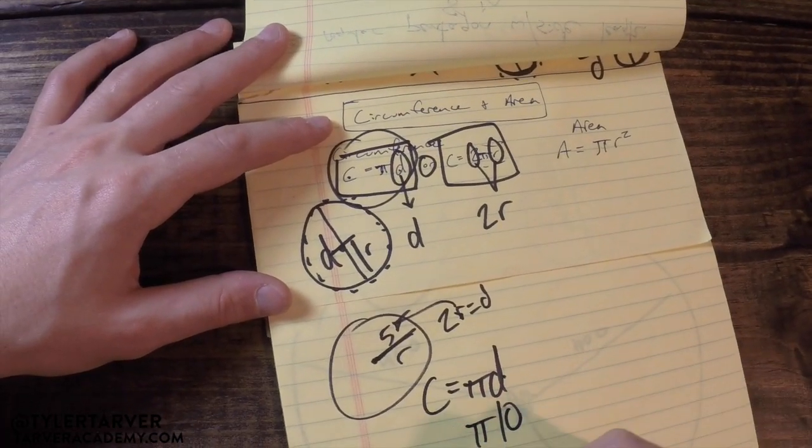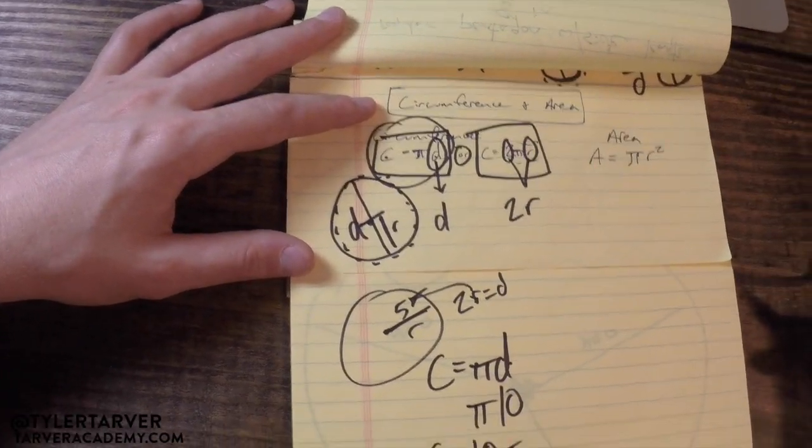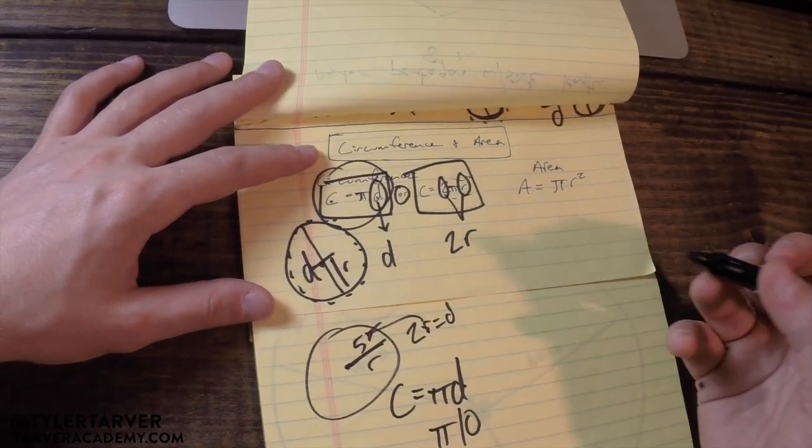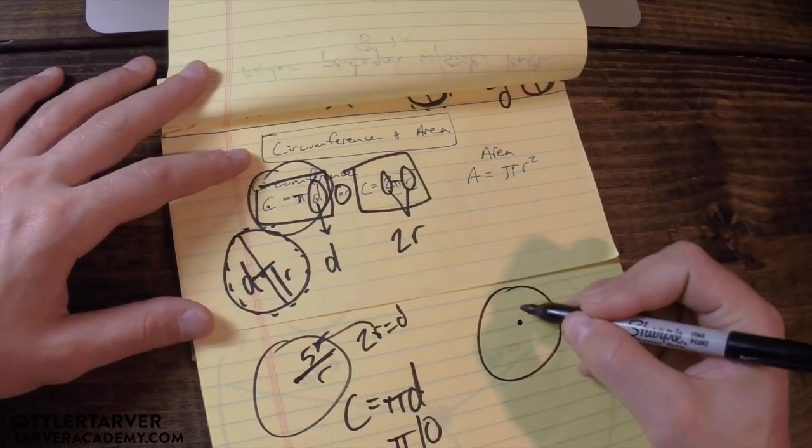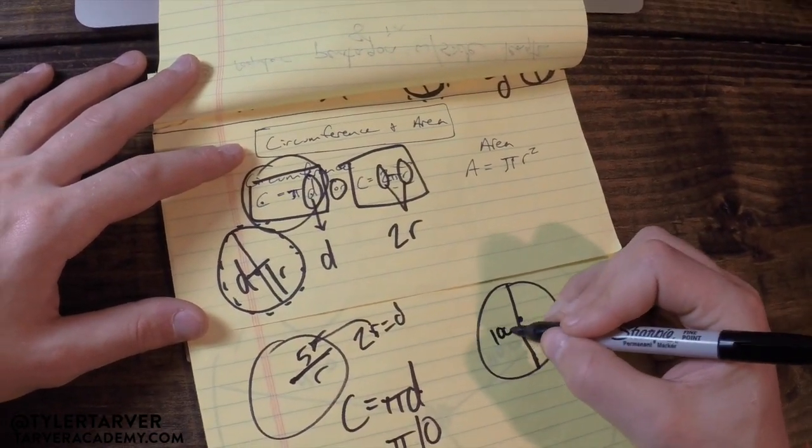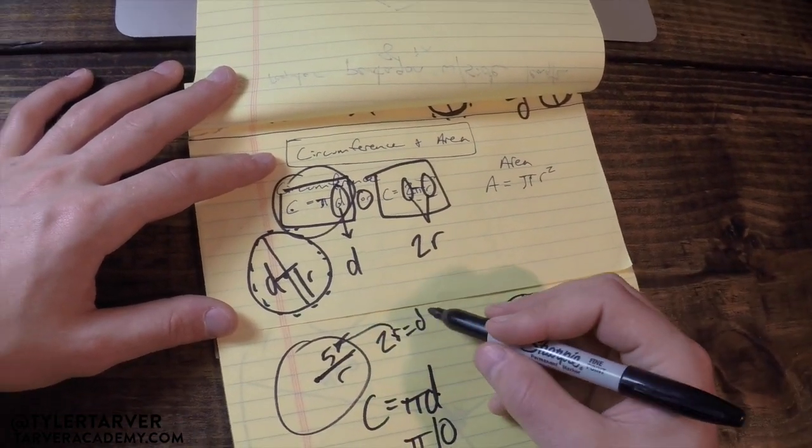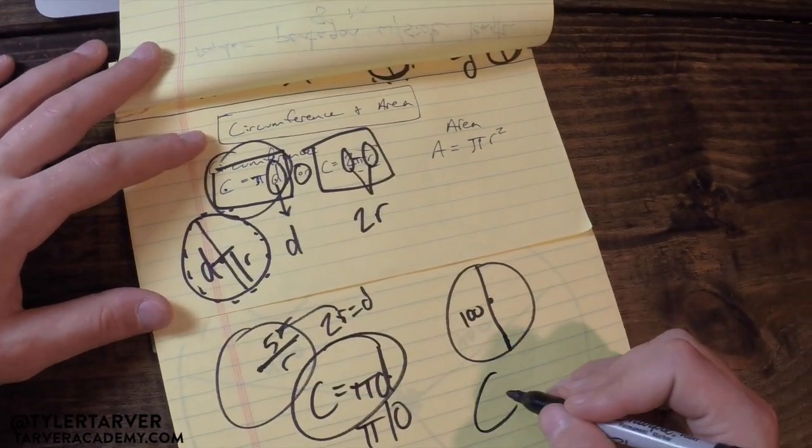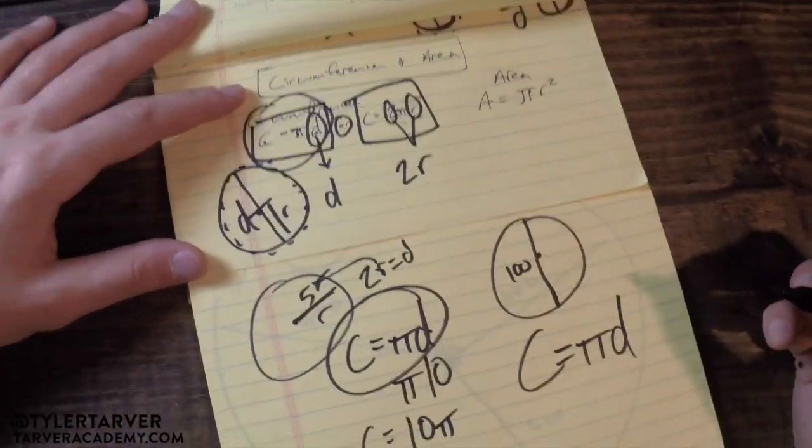Okay, yeah, not bad. Let's say we start with the diameter. Say the diameter is, I don't know, a hundred. Well, we've already got our diameter, we can use the same formula: circumference equals pi times diameter.